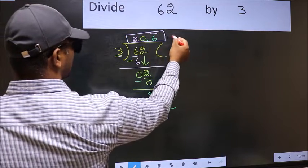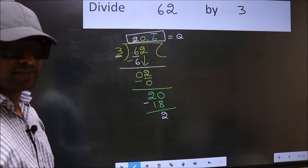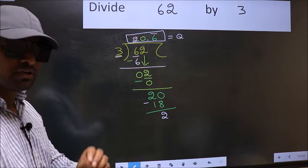So this is our quotient. Did you understand where the mistake happens? You should not do that mistake.